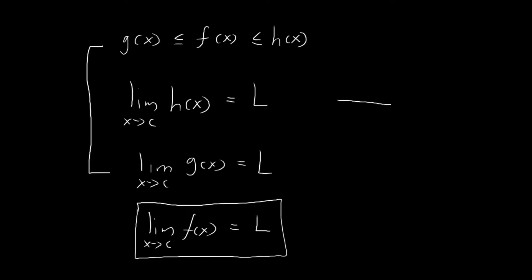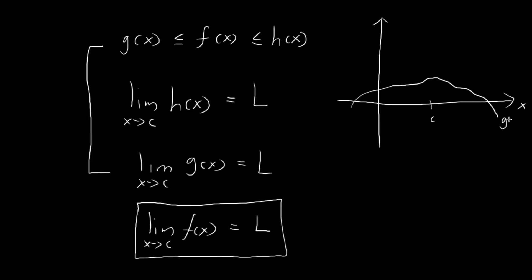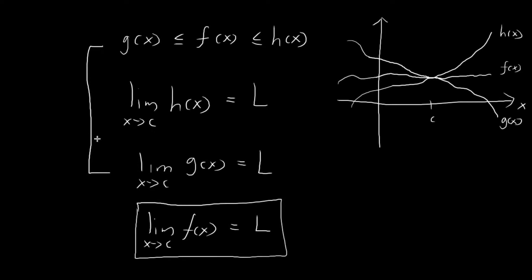In order to represent this graphically, you have your x-axis, and let's say this point is c. This is the graph of g of x, this is the graph of h of x, and this is the graph of f of x. So you see that f of x is always trapped between h of x and g of x. As x tends towards c, both functions h and g tend towards the value L, and what I want to prove is that f of x must also have a limit equal to L as x tends towards c.